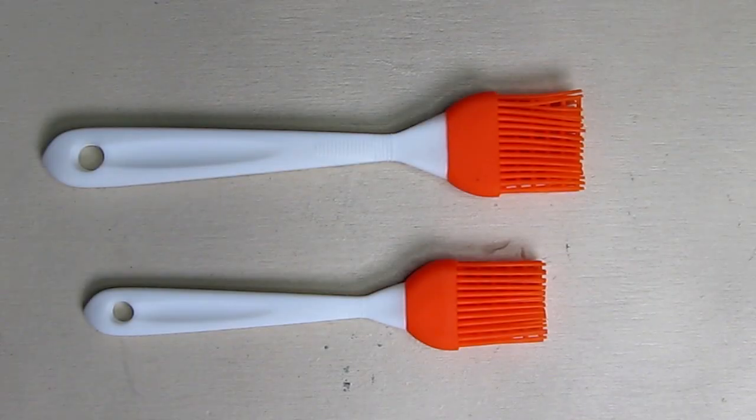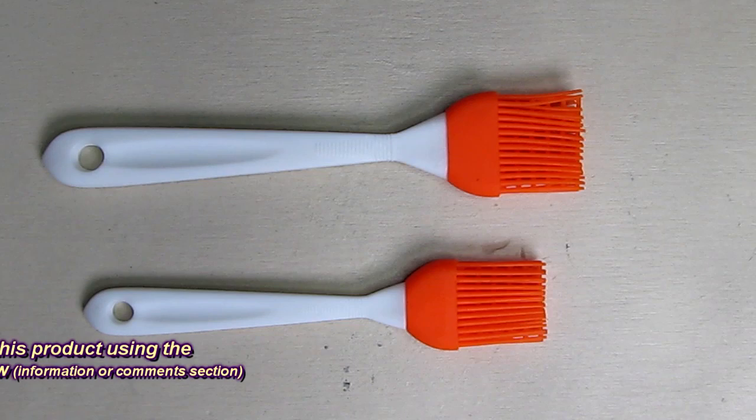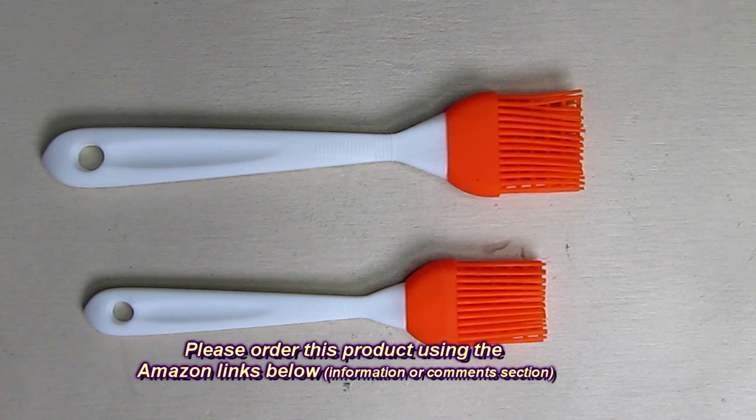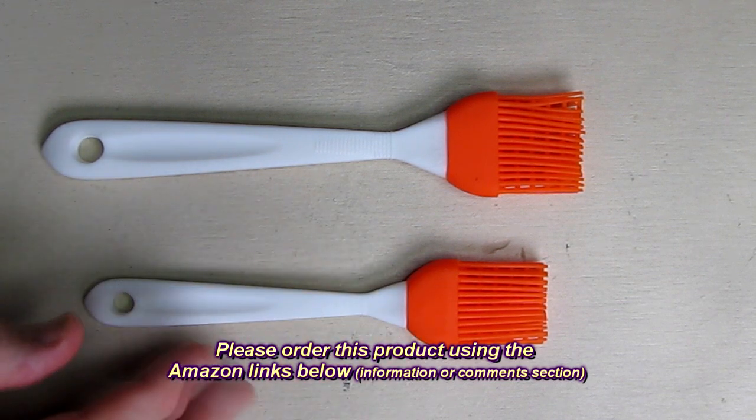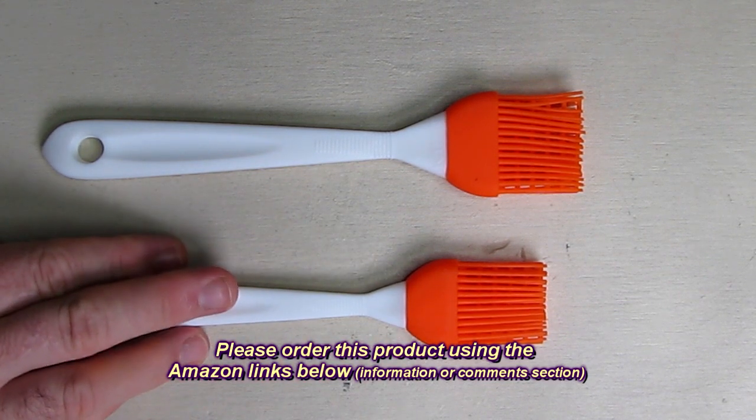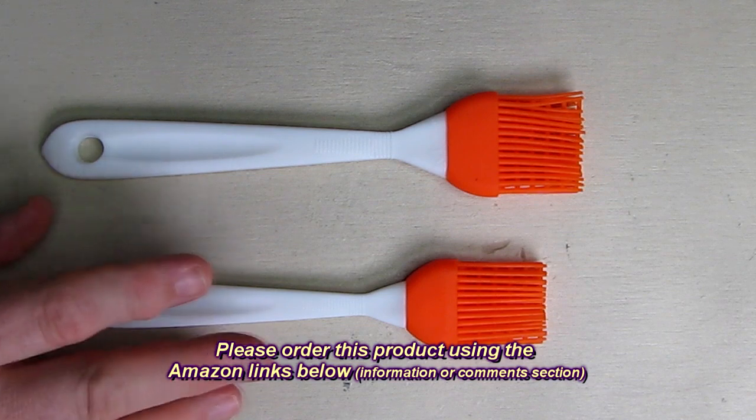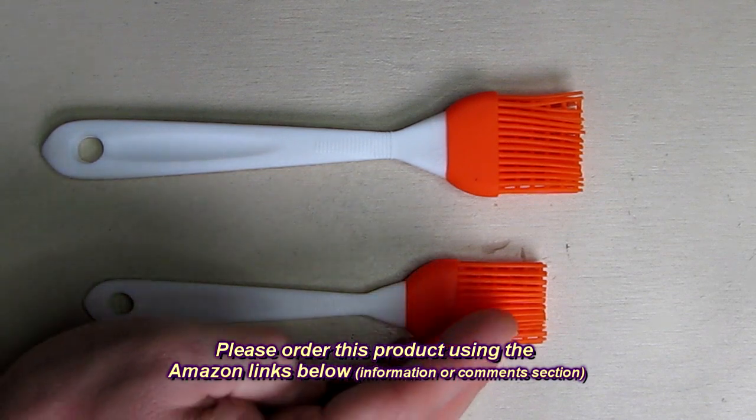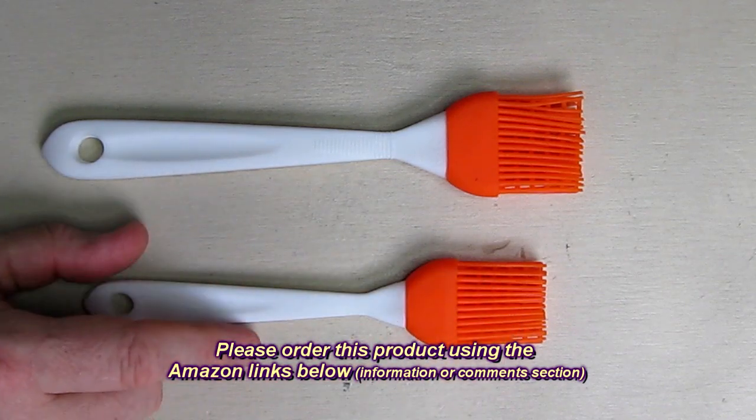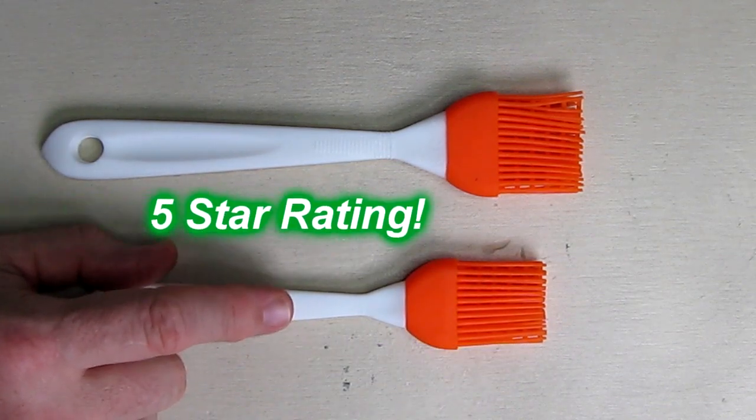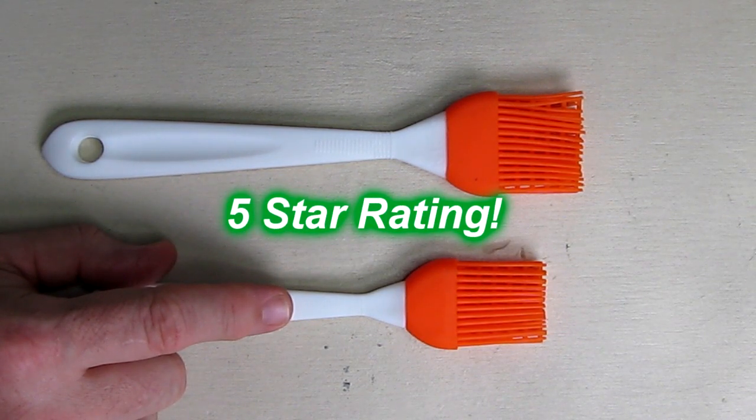So what do I think about the M Kitchen World silicone basting brushes two-piece set? I think this is a great value. They're very inexpensive, very high quality, and they do exactly what they're supposed to do. They allow you to baste things without having to worry about pieces of bristles falling off and worry about mold forming. I like this product. I'm going to give it a full five-star rating on my channel.